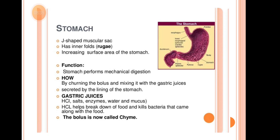What is the Stomach? It is a J-shaped muscular sac with inner folds called rugae, which increase the surface area of the stomach. The stomach performs mechanical digestion by crunching the bolus and mixing it with gastric juices. These gastric juices are secreted by the lining of the stomach — as you can see in the image, different bile juices are secreted from different parts.